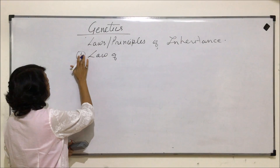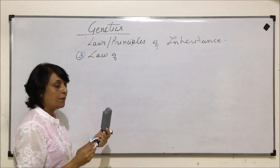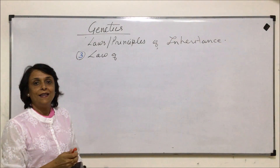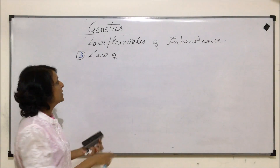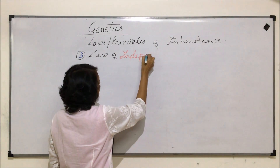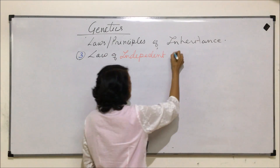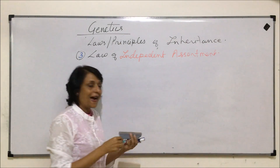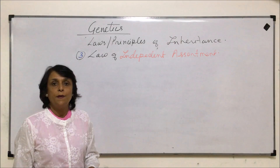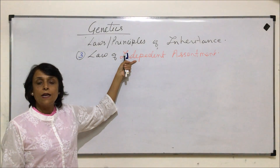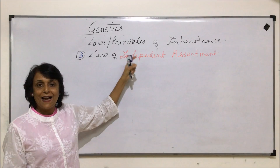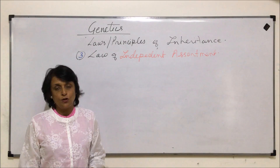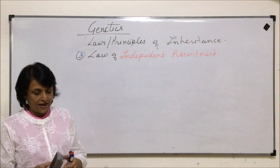In monohybrid crosses, we were able to understand the law of dominance and the law of segregation. To understand the third law — the law of independent assortment — we need to take a dihybrid cross. This law can be explained only by using a dihybrid cross, whereas the law of dominance and segregation can be explained using monohybrid as well as dihybrid crosses.